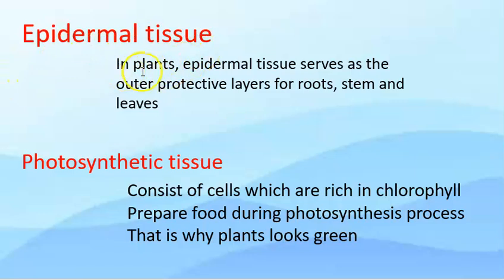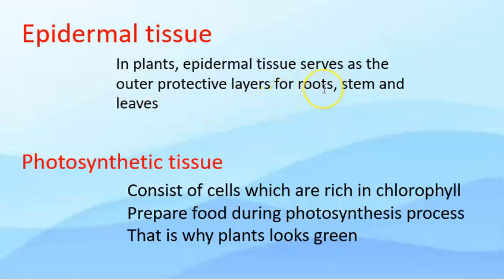Epidermal tissue in plants serves as the outer protective layer for roots, stem and leaves. This is called epidermal tissue — the outer protective layer. It covers the roots, stem, and leaves of the plant.